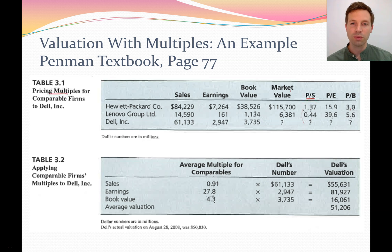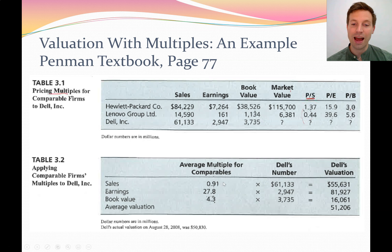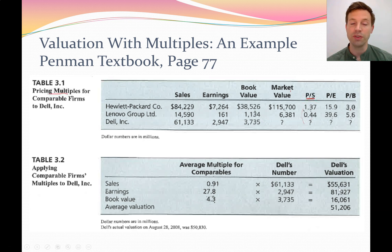We want to try and value Dell because Dell is a computer manufacturing company and Hewlett Packard and Lenovo sell similar products — they're all in the same industry. So why not take an average of the industry ratios and apply it to Dell? We know Dell's sales, earnings, and book value from their financial statements. For the price to sales ratio, Hewlett Packard have 1.37 and Lenovo have 0.44, giving an average of 0.91. Multiplying Dell's sales of 61.133 billion by 0.91 values Dell at approximately $55.631 billion.